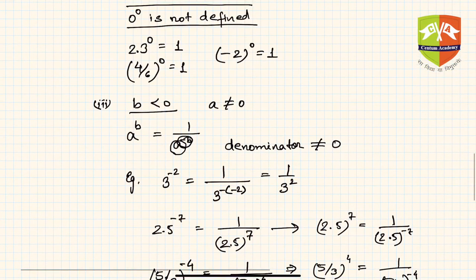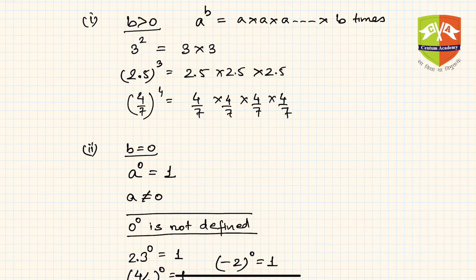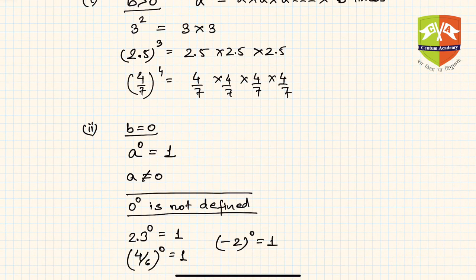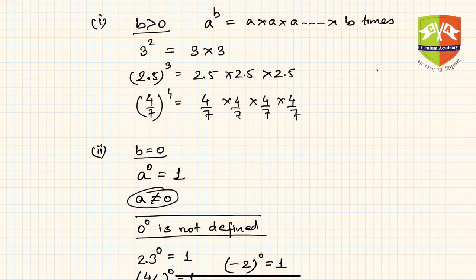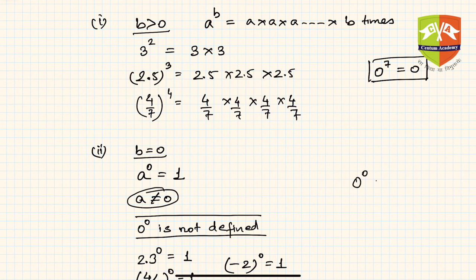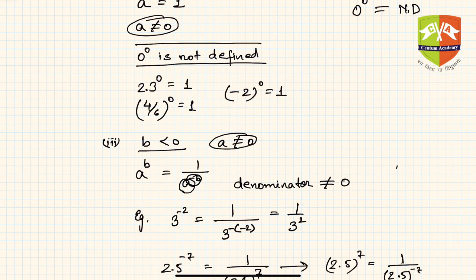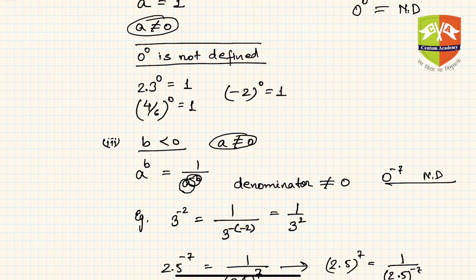In summary, a^b is defined for integer b: b > 0 (a any real number), b = 0 (a ≠ 0), and b < 0 (a ≠ 0). Special cases: 0^7 = 0, but 0^0 is not defined, and 0^(-7) is also not defined. In the next session we will discuss the laws of exponents.